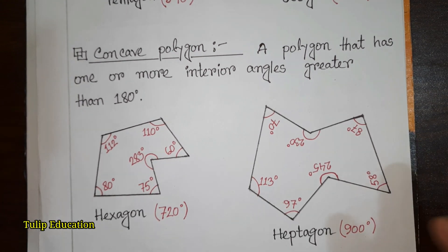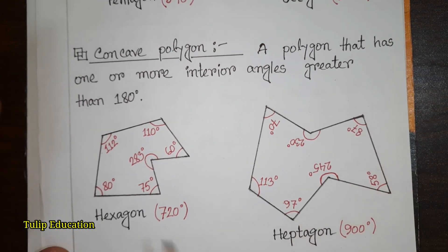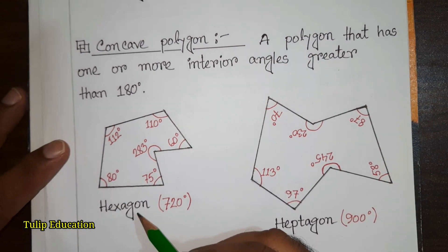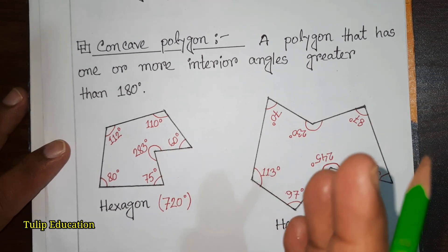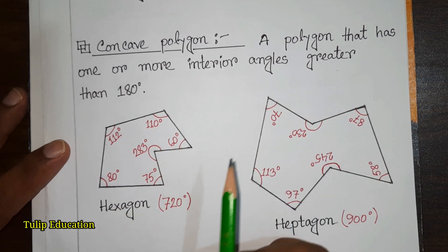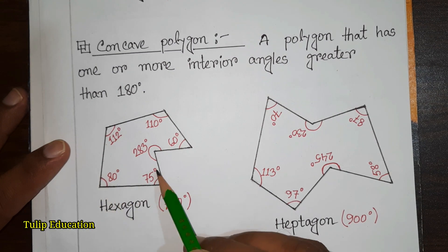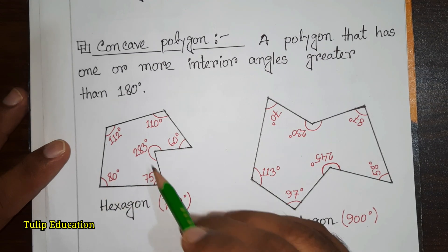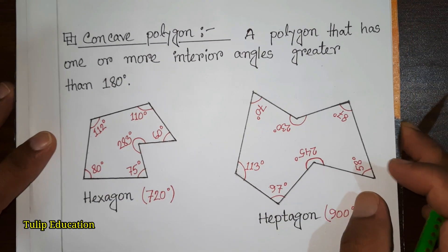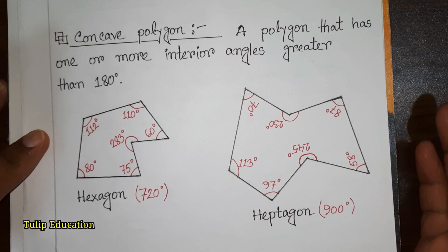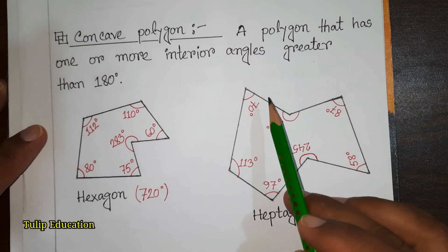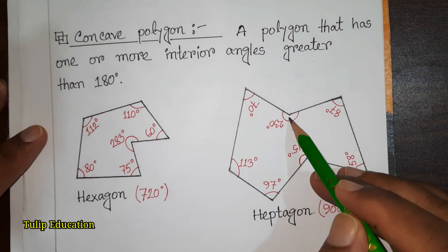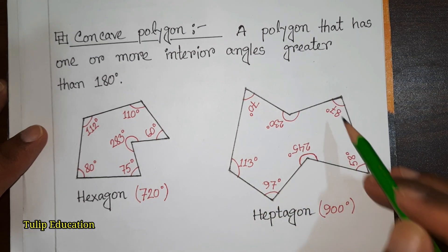Here are two polygons — one is a hexagon and another is a heptagon. A hexagon has six sides and six angles, and a heptagon has seven sides and seven angles.